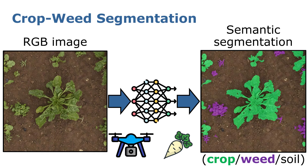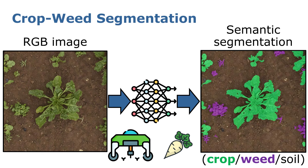For example, if we would like to perform crop-weed semantic segmentation on UAV data for a sugarbeet field, we first have to label UAV data for a sugarbeet field. If we then change our robot from a UAV to a UGV, we have to again label new data. And this is especially the case when we enter a new field with a new crop species, say moving from sugarbeet to maize. Having to label so much data continuously is not cost-effective, and labeling is currently the bottleneck for most fully supervised networks.